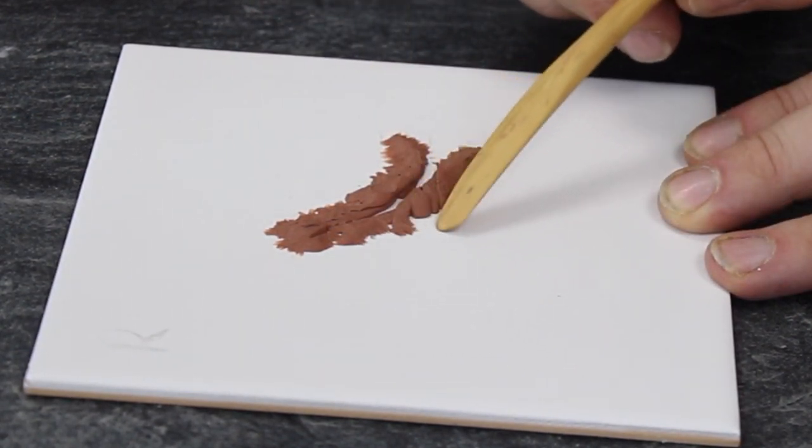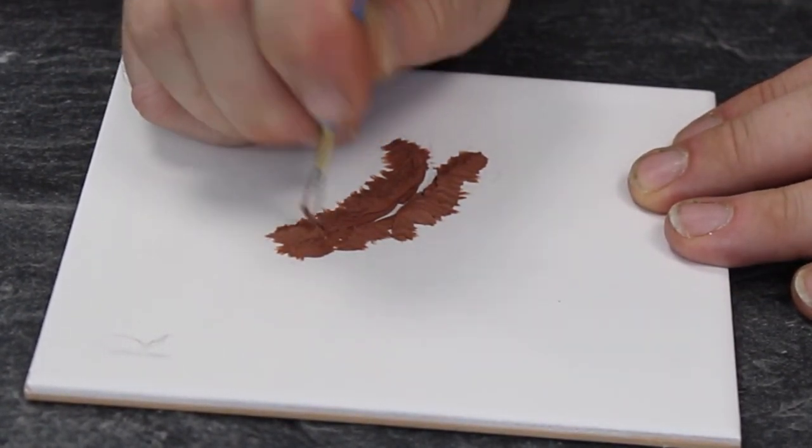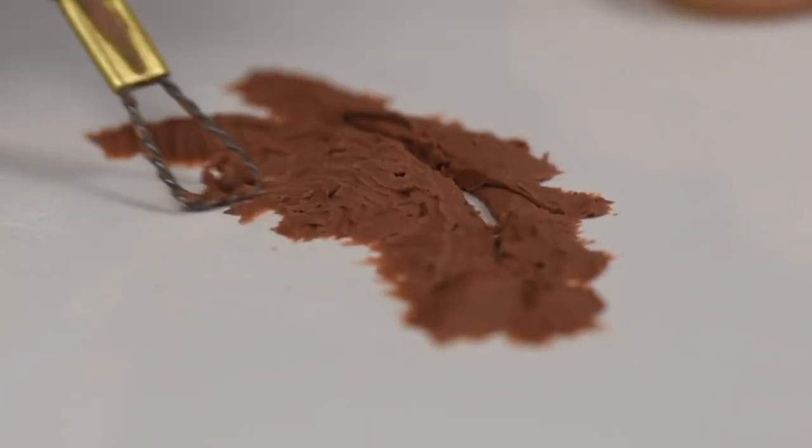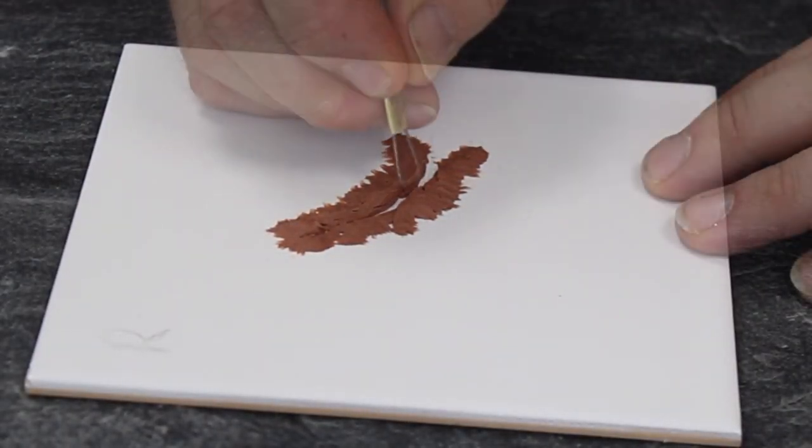I've used little balls of clay and little sausages of clay, laid them out following my pencil outline into the shape I want. Then I've used modeling tools like a wooden tool and a wire tool to blend the surface together.